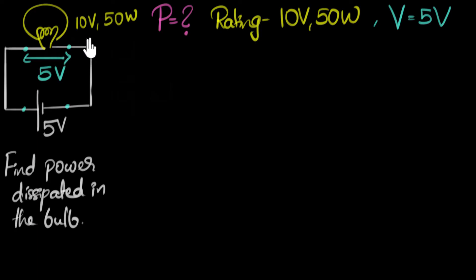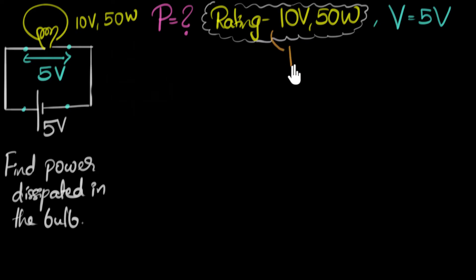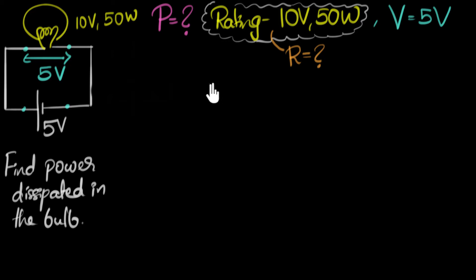Our first big step is going to be to figure out the resistance of this bulb. The secret lies in the rating. We already know that the bulb must have some resistance such that when you put 10 volts across it, 50 watts must get dissipated. So using this information, we can figure out the resistance of the bulb, and once we have the resistance, we can solve the circuit like we did in all previous cases. It would be a great idea to pause the video and try to do this yourself.